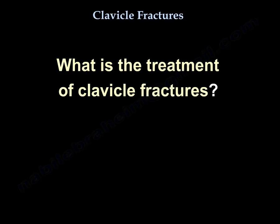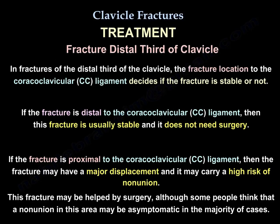What is the treatment of clavicle fractures? In fractures of the distal third of the clavicle, the fracture location relative to the coracoclavicular ligament decides if the fracture is stable or not. If the fracture is distal to the coracoclavicular ligament, it is usually stable and does not need surgery. But if the fracture is proximal to the coracoclavicular ligament, it may have major displacement and carry a higher risk of nonunion, and surgery may be beneficial.